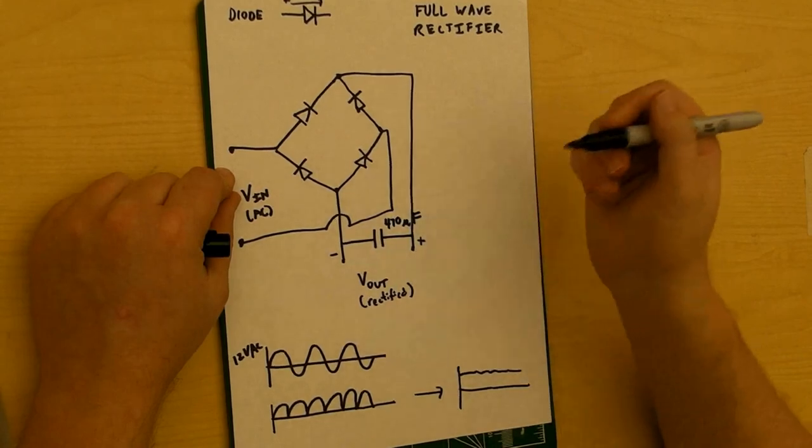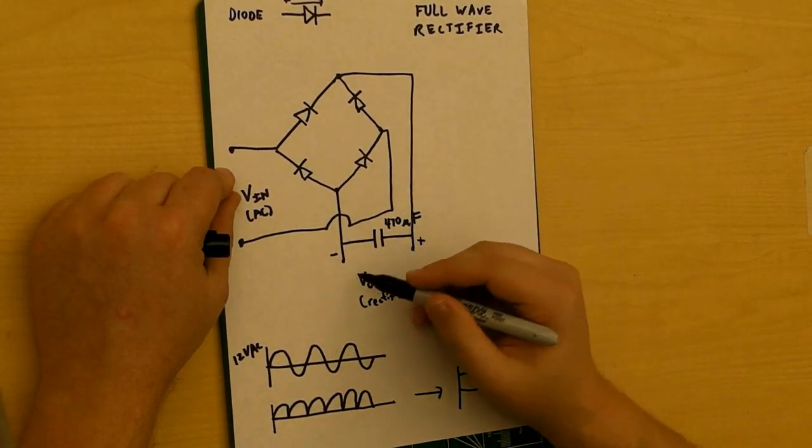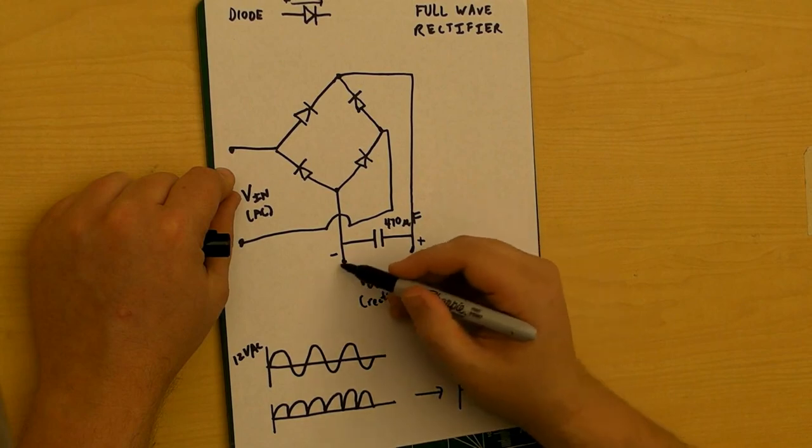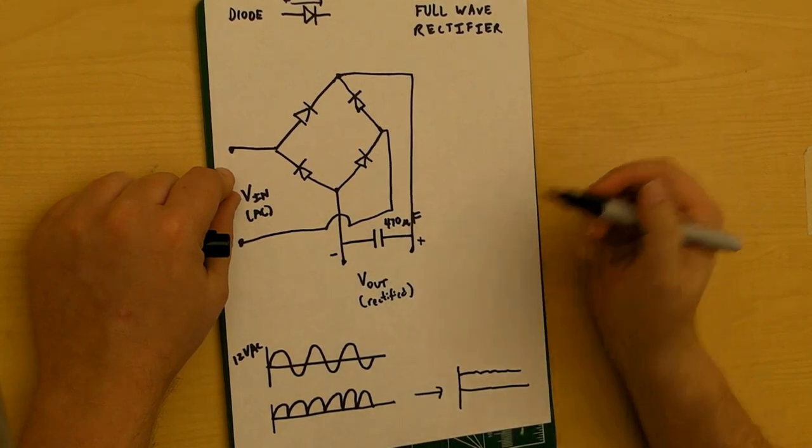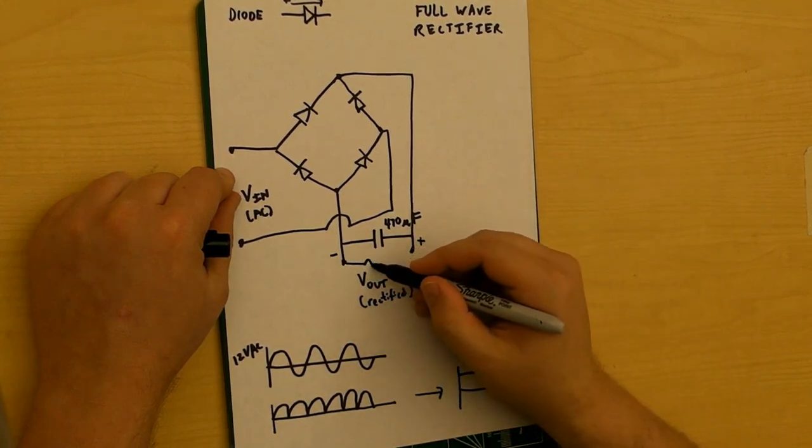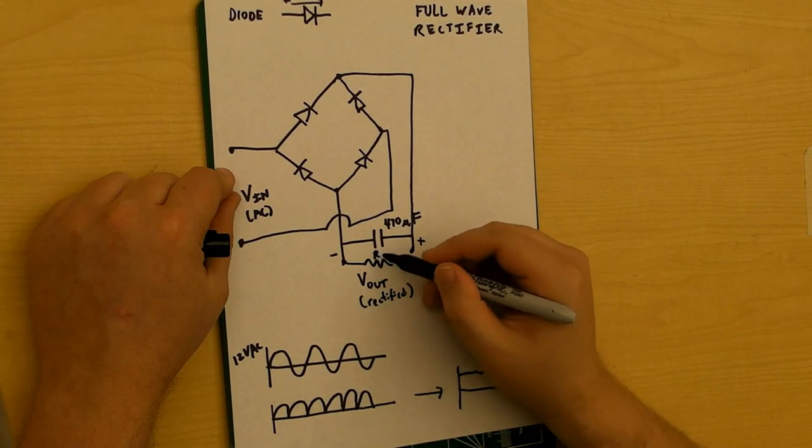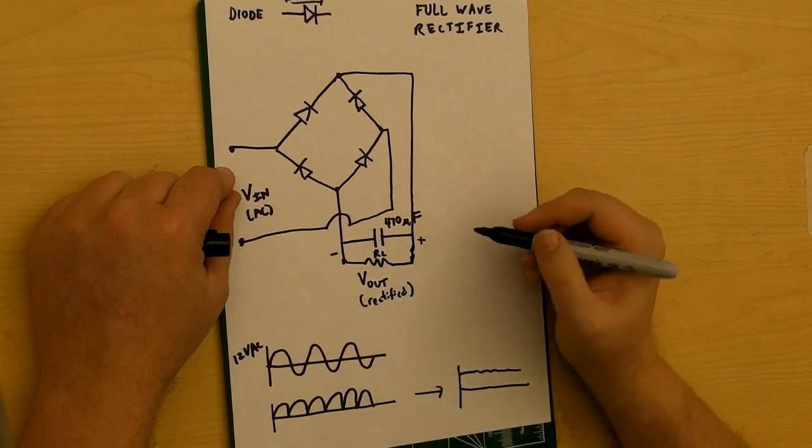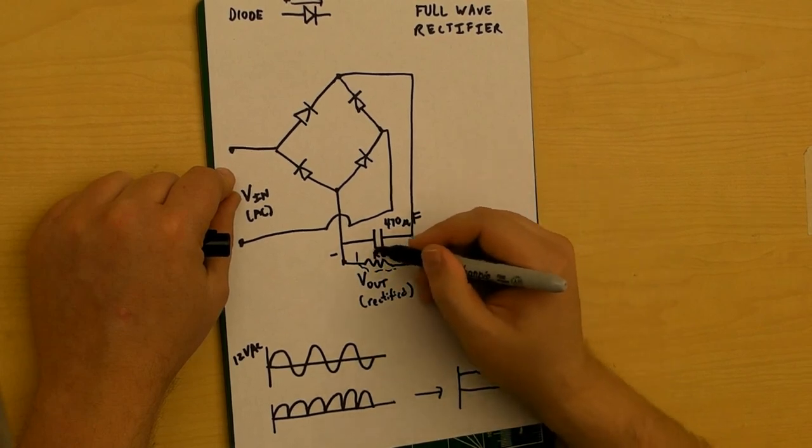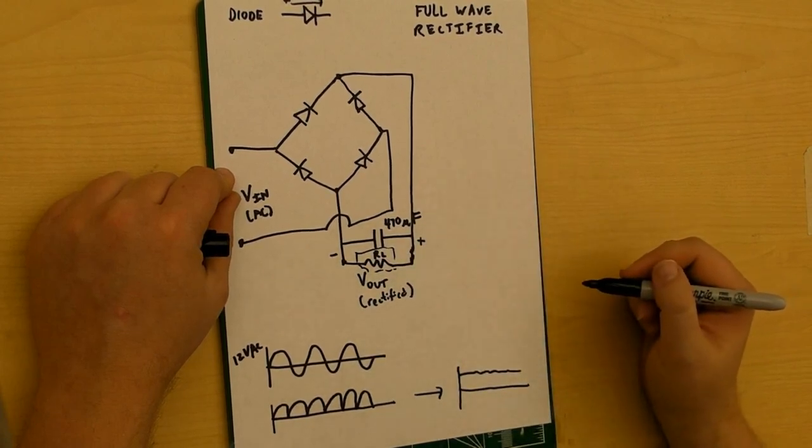So there you have it. There's a DC power supply. Now remember, your load, whatever it is you're actually supplying voltage to, is put across here. So I'm going to write that as RL, basically the resistance of the load right here. And that's it. Now you have yourself a DC power supply.